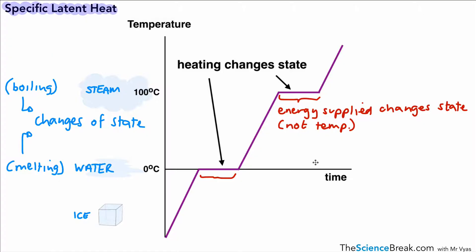That amount of energy that's needed to change the state happens twice on this graph, but that amount of energy has a name. That energy supplied there is called the latent heat. So the energy supplied to change state but not the temperature is called latent heat.